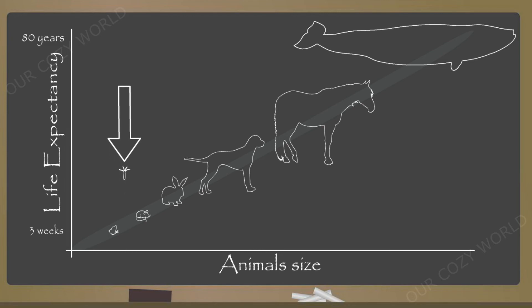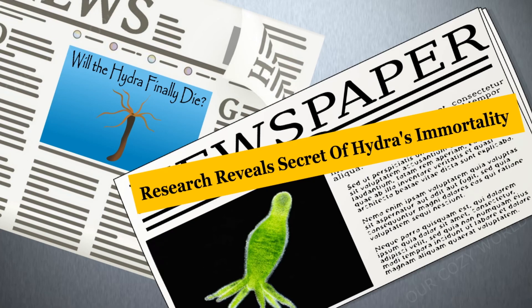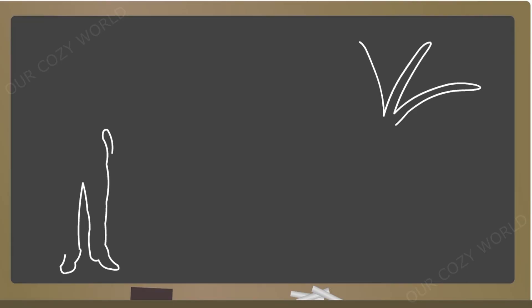If summer lasted for years or even decades, tiny Hydras could live in water all this time. That is why after many years of scientific research, the Hydra was officially recognized as immortal. But what is the secret of its eternal youth?